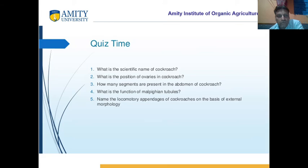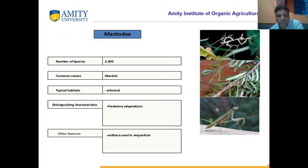What is the function of male Malpighian tubules? They are the excretory system — they remove the toxic nitrogenous material out of the body. Name the locomotory appendages of cockroaches. These are legs — 3 pairs of legs and 2 pairs of wings.